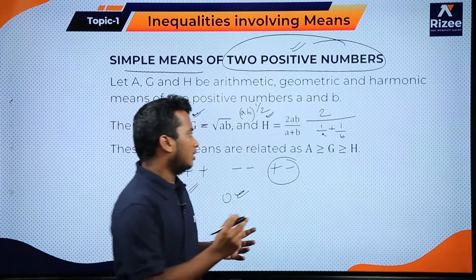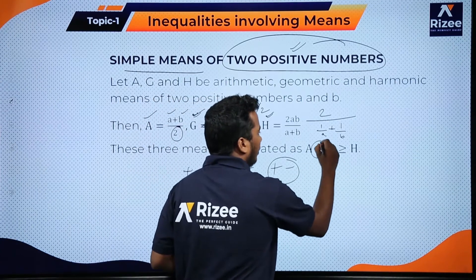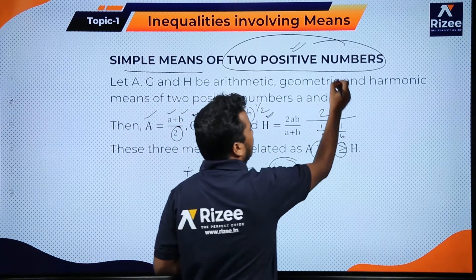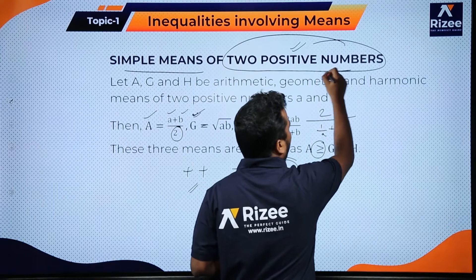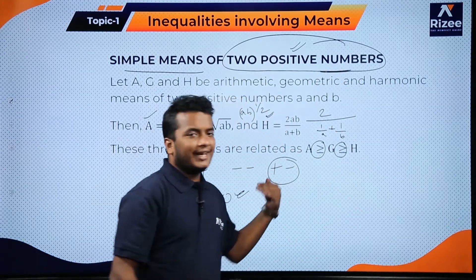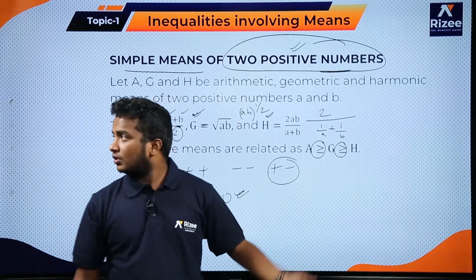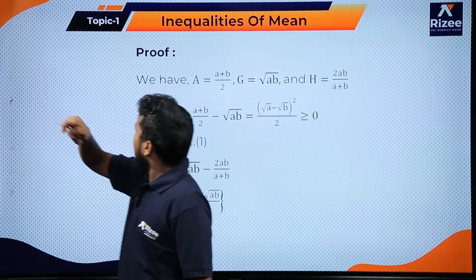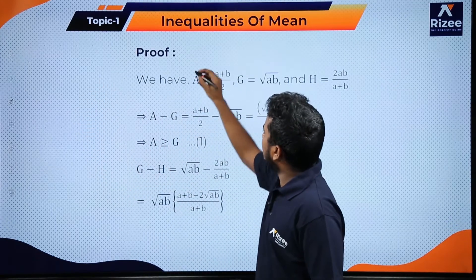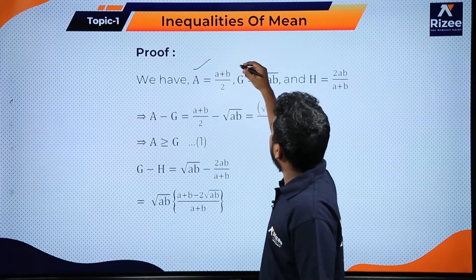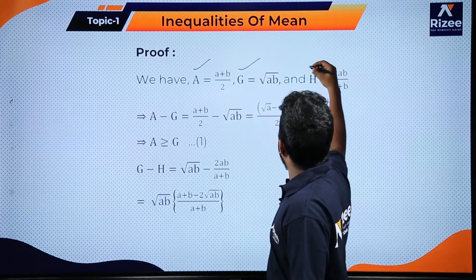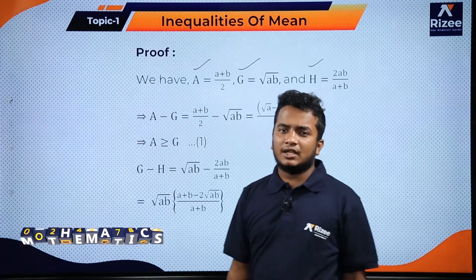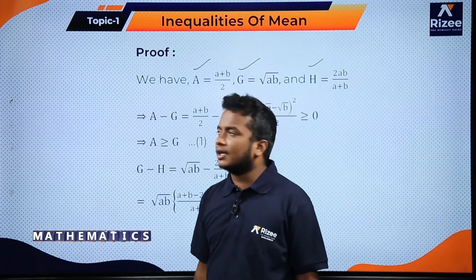We can establish an inequality between AM, GM, and HM of numbers, but that inequality is only established if the numbers are positive. I am now proving the relation AM ≥ GM ≥ HM, which we will discuss in the later part of the video.